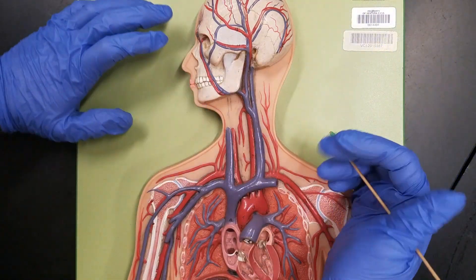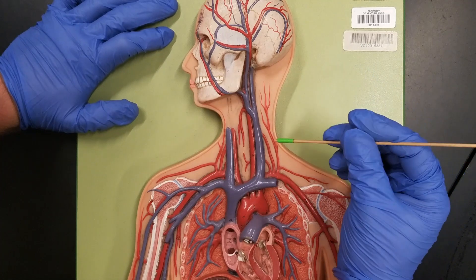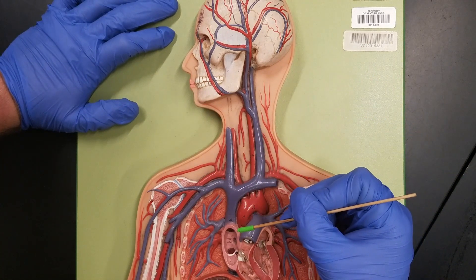Hello and welcome to Anatomy with Dr. P. In today's lesson, we're going to be looking at the major veins that drain blood flow back to the right side of the heart.